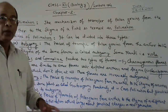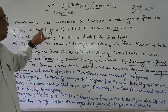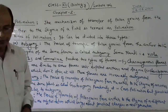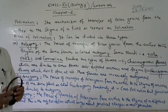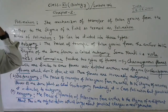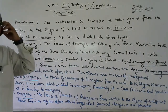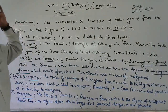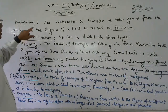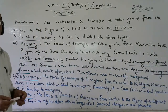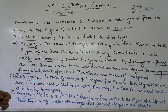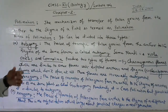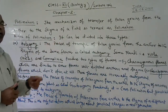Dear students, today we will discuss about the pollination of the carpel tube. What is called pollination? Pollination means the mechanism of transfer of pollen grains from the anther to the stigma of a pistil is termed as pollination.